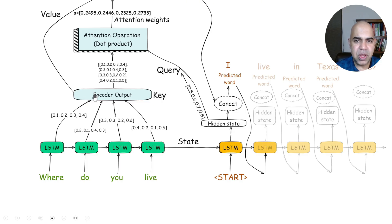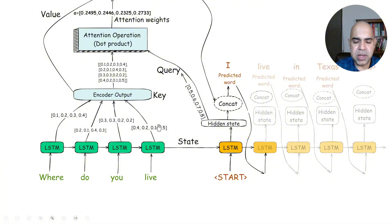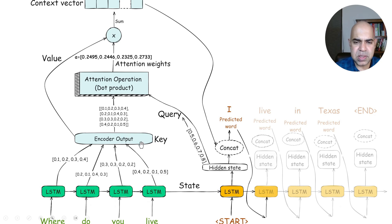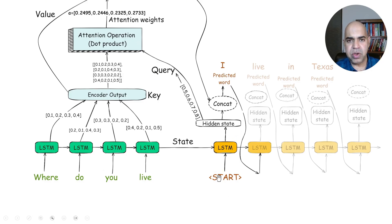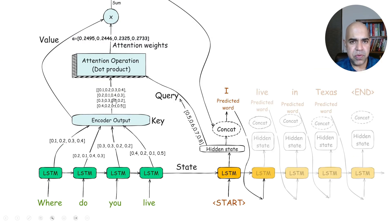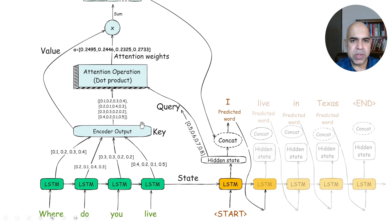The encoder output is a combination of all four hidden states coming from these four words. If we had 10 words in the encoder, there would be 10 hidden states. These four hidden states are called keys — all the hidden state outputs of all words in the encoder are called keys. This set of keys is the same as value. The terms key and value are actually the same here for LSTM-based encoder decoder attention mechanism. So: query is the hidden state output of a given token in the decoder; key is the set of all hidden states of the encoder; and value is the same as keys.